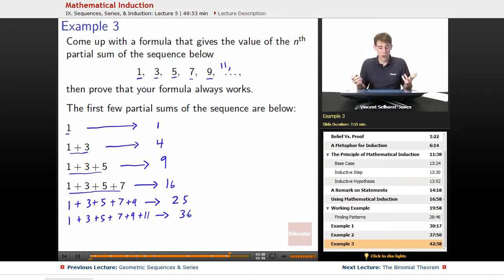Hey, we've got an idea on what the formula is. It looks like the nth partial sum is going to be equal to n squared. Great. So what we've got here is 1 plus 3 plus 5 plus blah, blah, blah, plus something. What do we end on is equal to n squared.